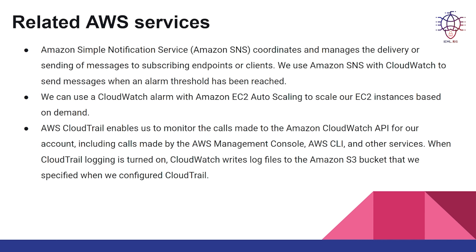We can use a CloudWatch alarm with Amazon EC2 auto-scaling to scale our EC2 instances based on demand. AWS CloudTrail enables us to monitor the calls made to the Amazon CloudWatch API for our accounts, including calls made by the AWS Management Console, AWS CLI, and other services. When CloudTrail logging is turned on, CloudWatch writes log files to the Amazon S3 bucket that we specify when we configured CloudTrail.